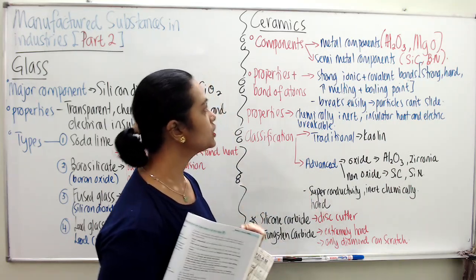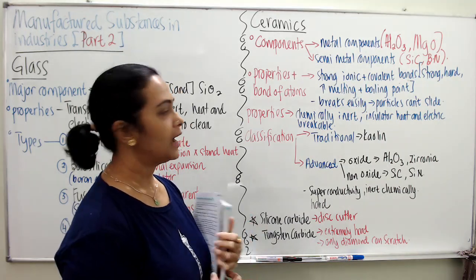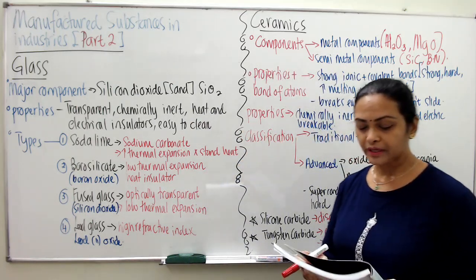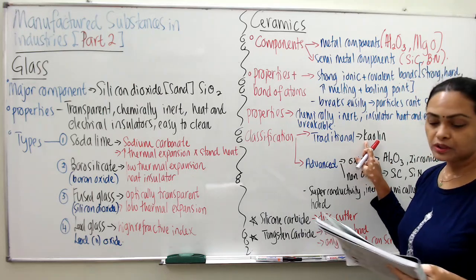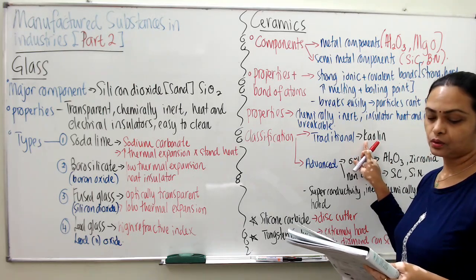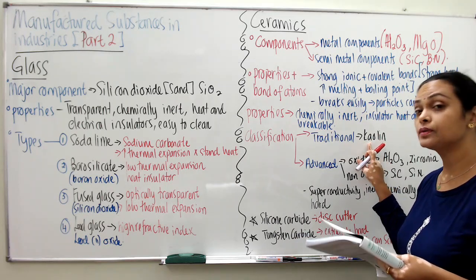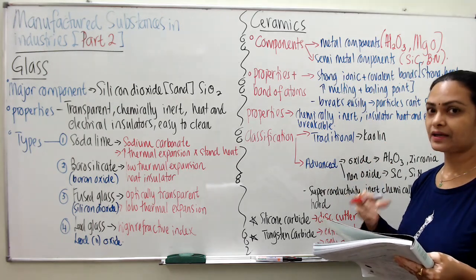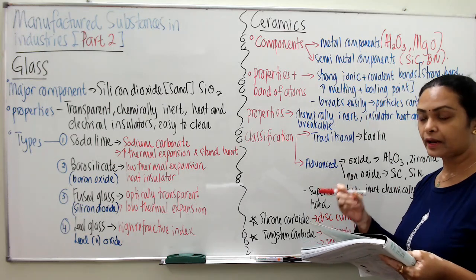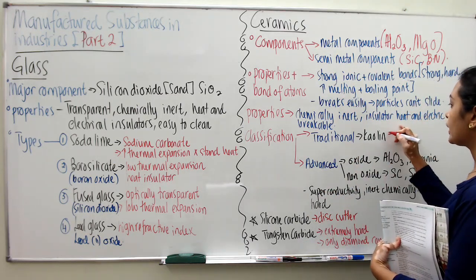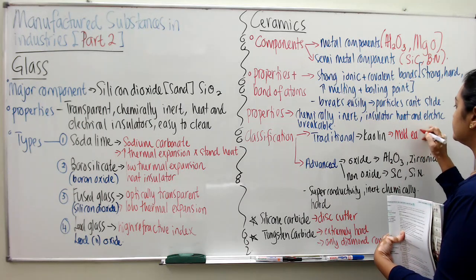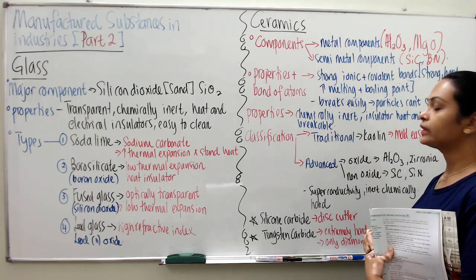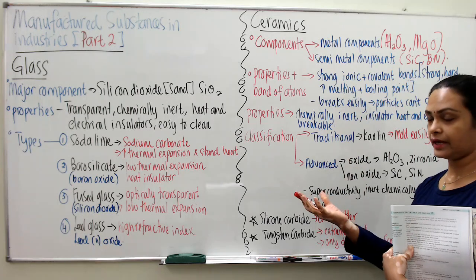Now let's go to the classification of ceramics: traditional and advanced. Traditional ceramics use simple aluminosilicate, which is kaolin — a combination of aluminum, oxygen, and silicon, essentially clay. When mixed, they can be molded easily, which is why traditional ceramics are used as cookware and for storing water.